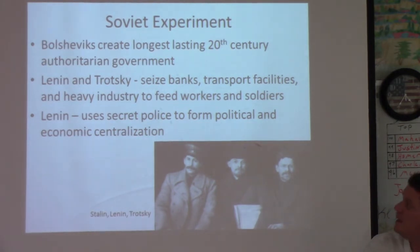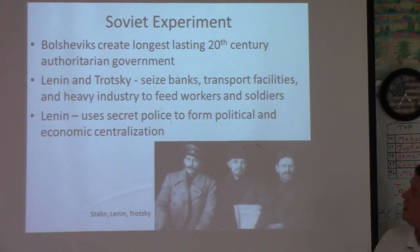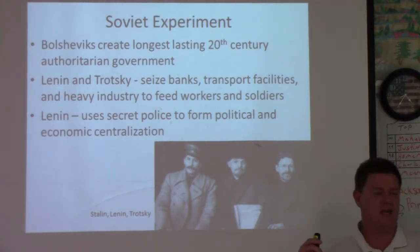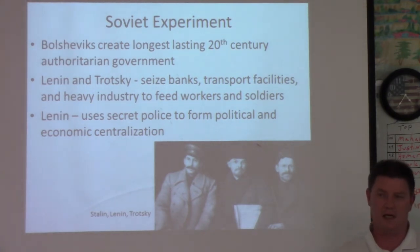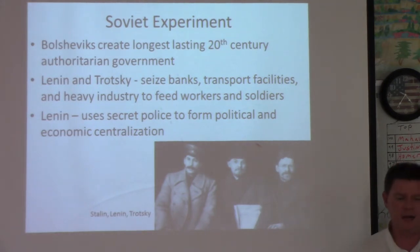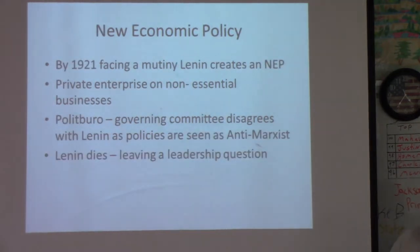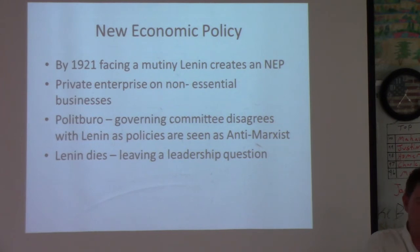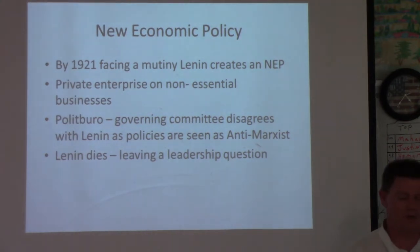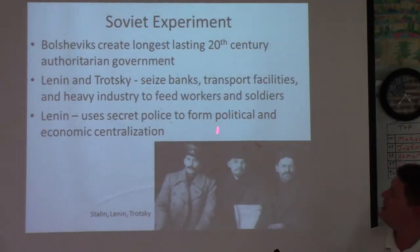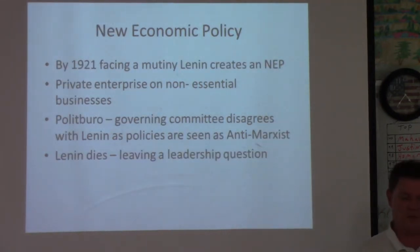Lenin demands that all land be turned over to the peasants, all factories to the workers and soldiers. They seize the banks to give the money to the people who need it. Churches are closed. Since Lenin was supported by Germany, he was forced to sign an armistice with them — which was costly for Russia, as they had to give up territory and pay large war damages. But Lenin needed time to consolidate his power, as civil war was about to break out.